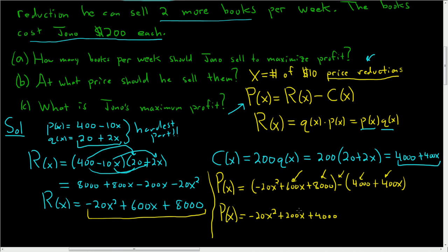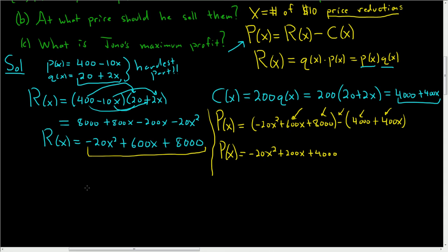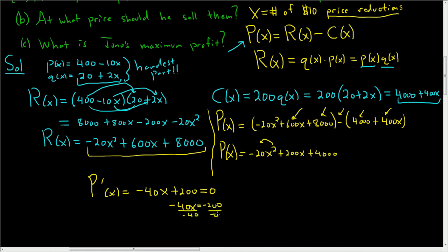The rest of the problem is actually pretty easy. We have to find the maximum of this function, so we'll use the second derivative test. We'll take the derivative, set it equal to 0, and find the critical numbers. Taking the derivative: bring the 2 down, so you get −40X, plus the derivative of 200X which is just 200, and the derivative of 4,000 is 0. Setting this equal to 0, subtract 200, then divide by −40, and you get X equals 5. This is your critical number.